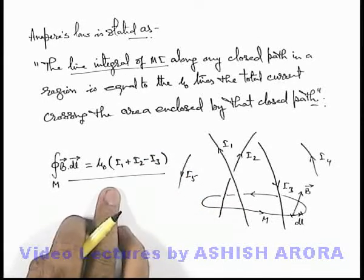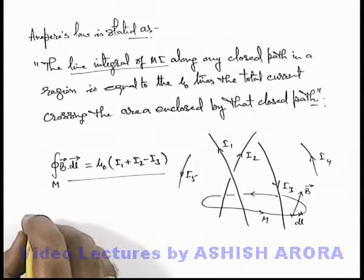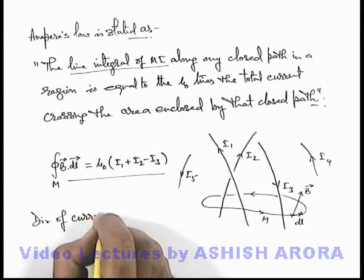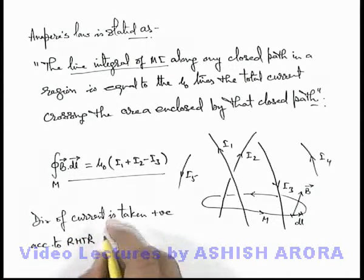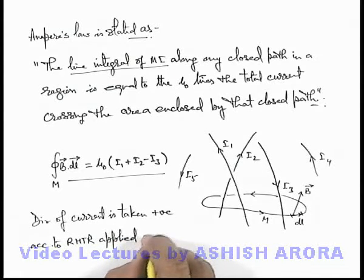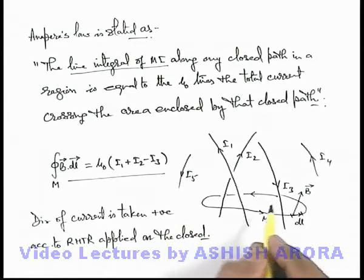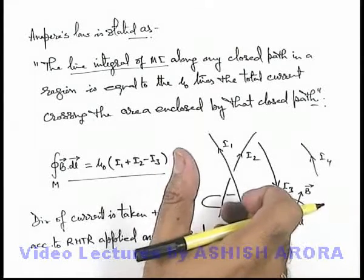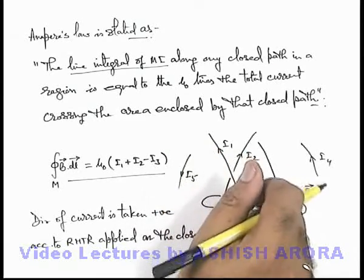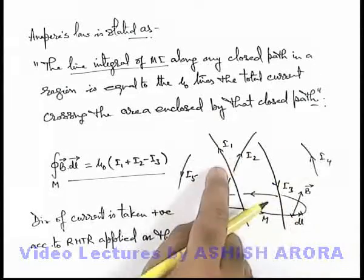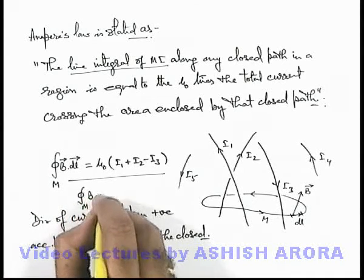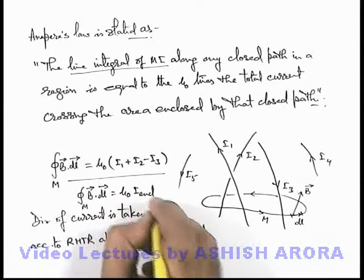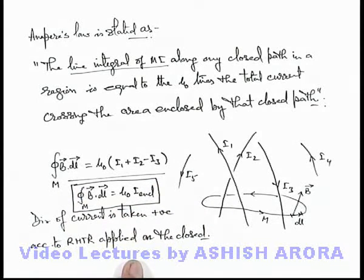In this situation, there is an important point to be considered: in which direction we should take the current. The direction of current is taken as positive according to the right-hand thumb rule applied on the closed path. If the closed path is taken anti-clockwise and you curl your right-hand fingers along the closed path, then the direction of your thumb will be the direction of positive current. So here i1 and i2 are taken as positive currents and i3 is taken as negative. Ampere's Law can be rewritten as: the closed path integral of B dot dl equals μ₀ multiplied by the total enclosed current. This is the expression for Ampere's Law which we are going to use in upcoming applications.